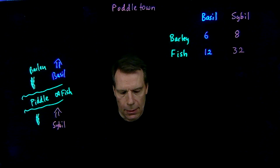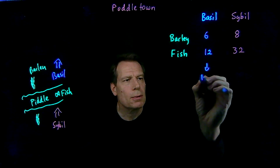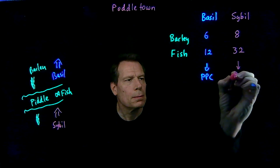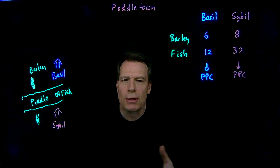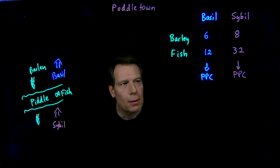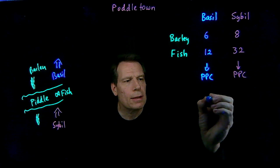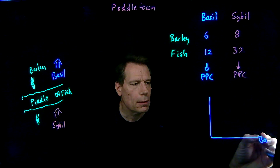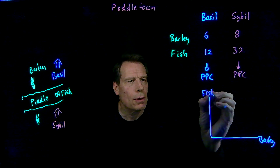So we have two separate economies, and we should be able to derive a production possibility curve for each of the two economies. What I'd like you to do, before you take the quiz, is to draw out the production possibility curves for each of those two sides of the river Piddle. Let's be consistent and put barley on the horizontal axis and fish on the vertical axis.